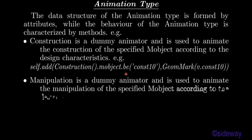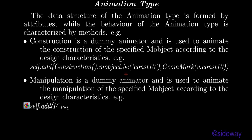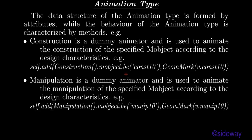Manipulation is a dummy animator used to animate the manipulation of the specified object according to the design characteristics. For example: self.add(Manipulation.mobj.b.const10, geometry_mark.b.manip10).